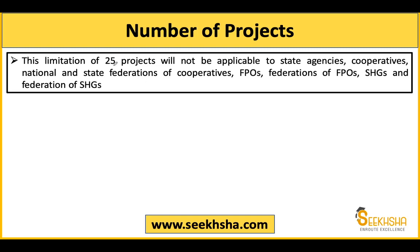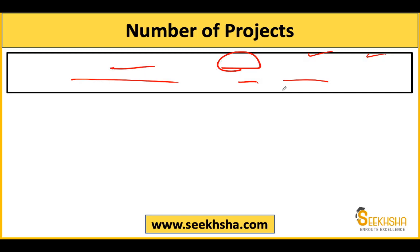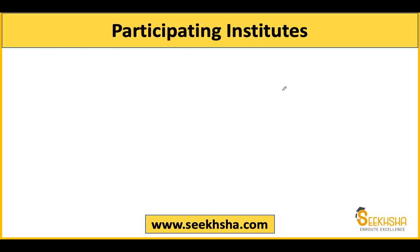The 25-project limit is for private sector entities. However, state agencies, cooperatives, national and state federations of cooperatives, FPOs, FPO federations, and SHGs are exempt from this 25-project limit. Note: this is not a very high-priority exam point.